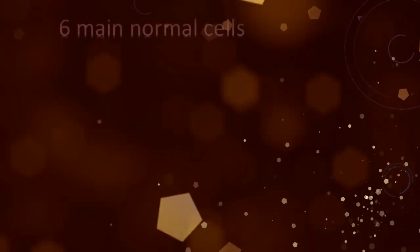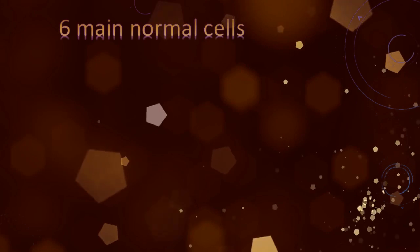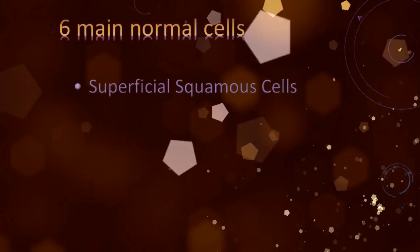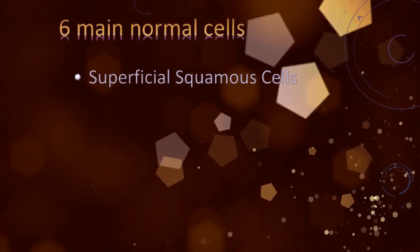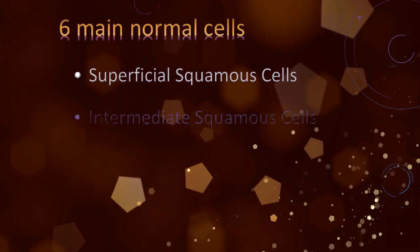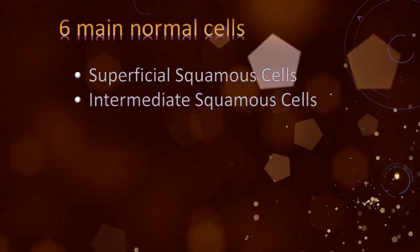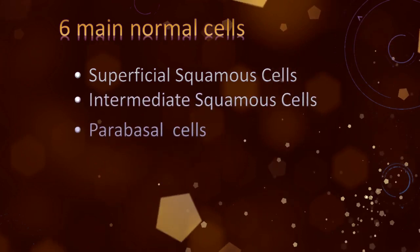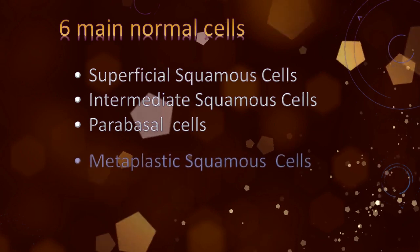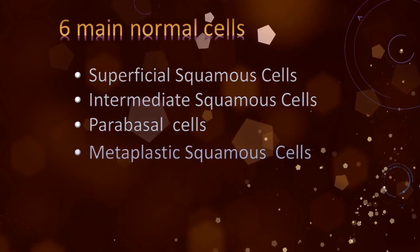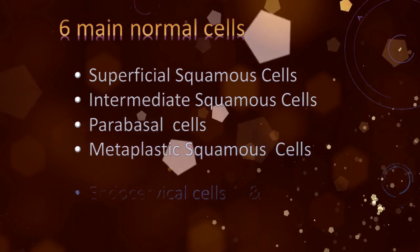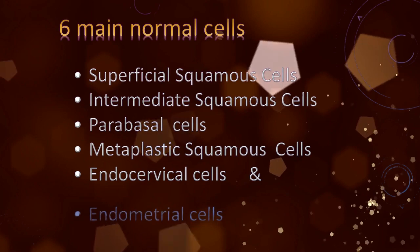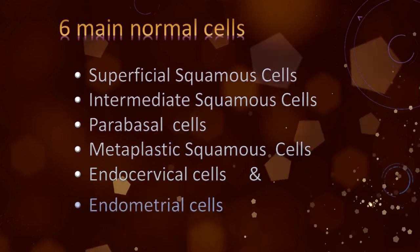There are 6 main normal cells we can see in a cervical smear: Superficial Squamous Cells, Intermediate Squamous Cells, Parabasal Cells, Metaplastic Squamous Cells, Endocervical Cells, and Endometrial Cells.